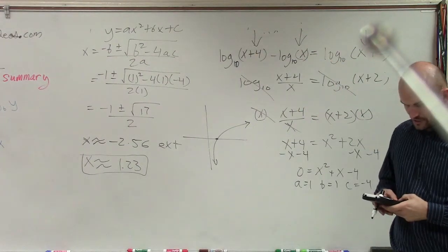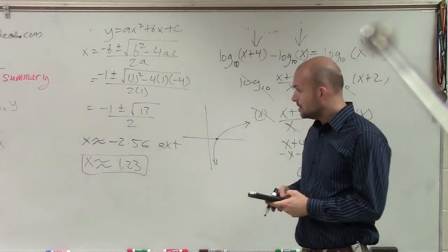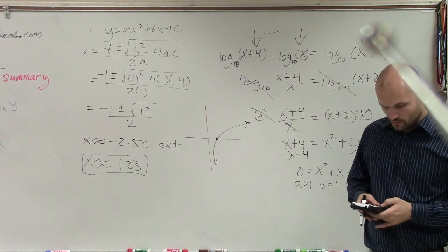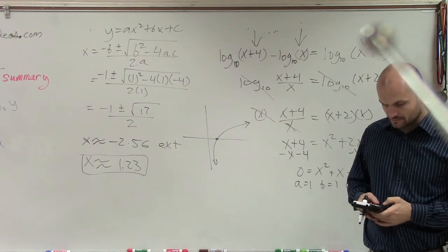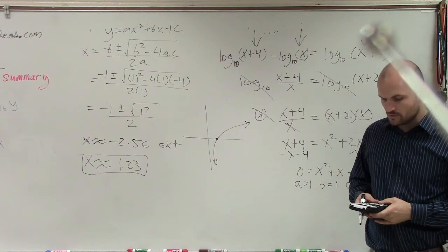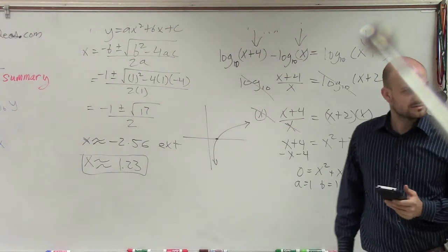I took negative 1, I added it to the square root of 17, and then I divided that by 2, which is 1.56.